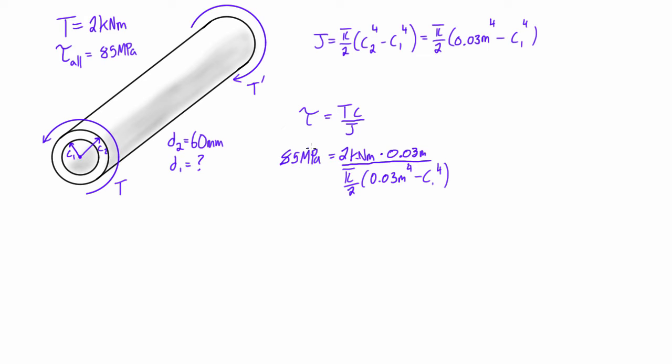So what we want to do is we'll convert this into pascals, so this is just 85 million pascals. We'll multiply it by pi and divide it by two, and we are left with 133,517,688 pascals on that side. And on the other side we'll convert kilonewton meters into newton meters, so that'll be 2,000 newton meters times 0.03 meters, and then on the bottom we're still left with the stuff that was in brackets, so this is all over 0.03 meters to the power of 4 minus c1 to the power of 4.